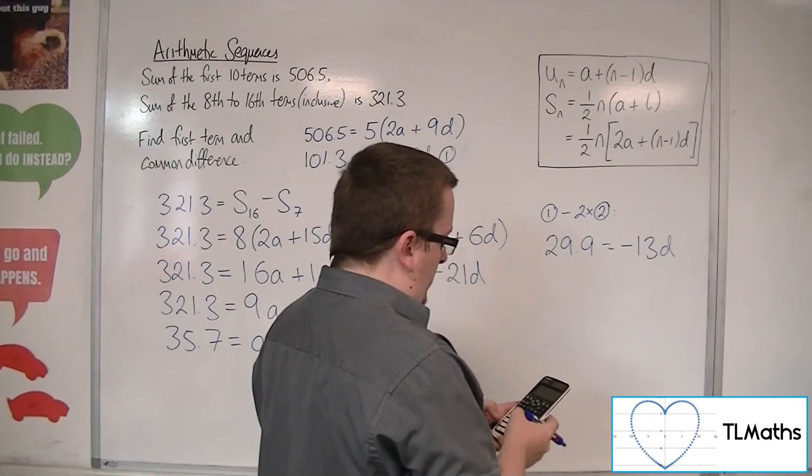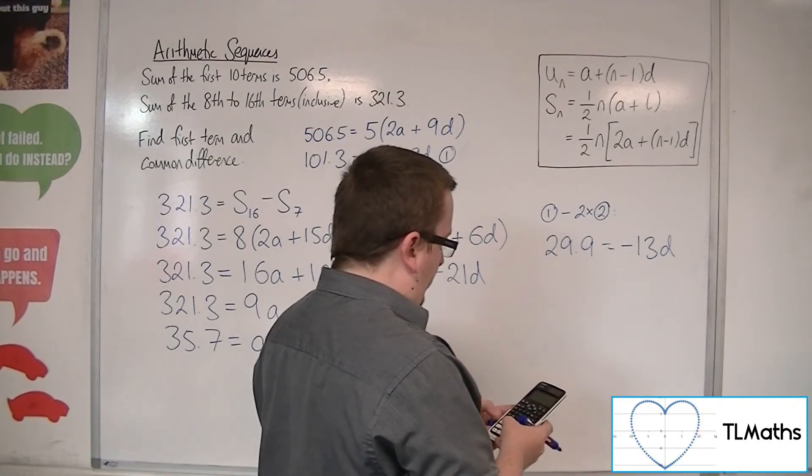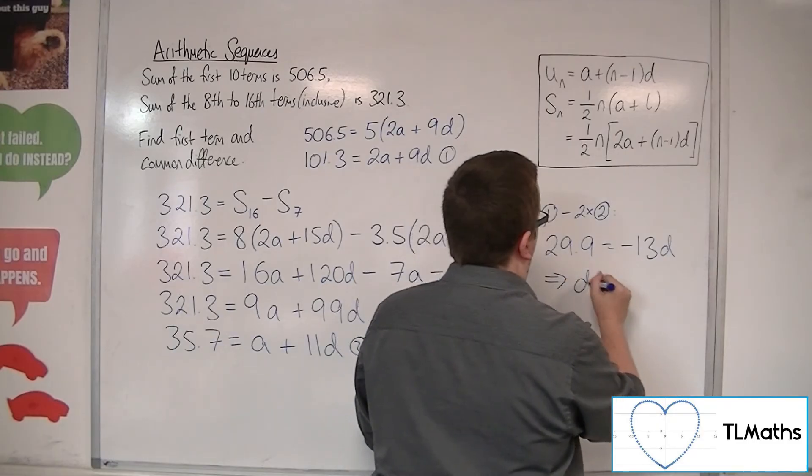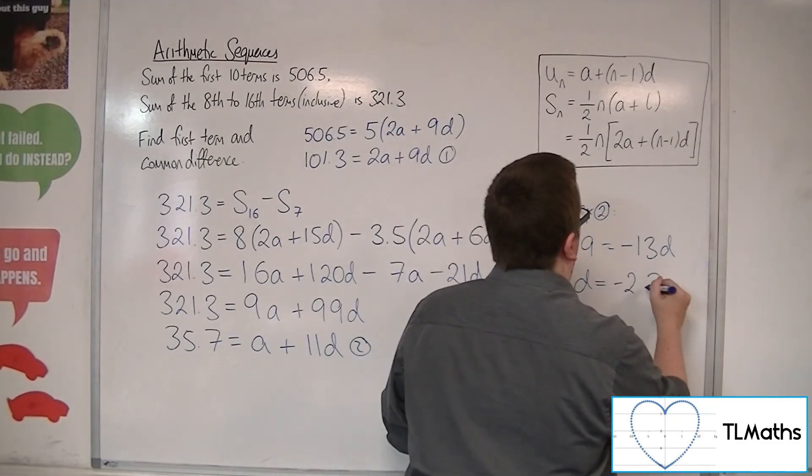So 29.9 divided by minus 13 is equal to minus 2.3. So there is the common difference.